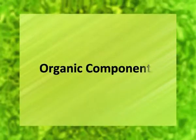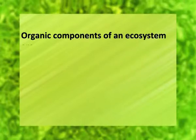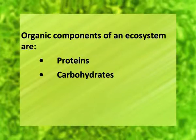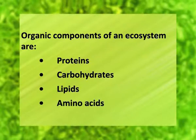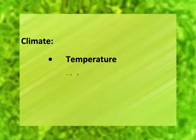The organic components of an ecosystem are proteins, carbohydrates, lipids, and amino acids. All of these are synthesized by the biota — that is, flora and fauna of an ecosystem — and are returned to the ecosystem as their wastes, dead remains, etc. The climatic factors include temperature, light, soil, etc., as other abiotic components of ecosystem.